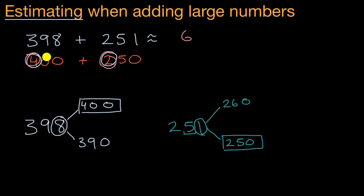And if I have zero tens and I'm adding it to five tens, well, I'm still going to have five tens. And then I have zero ones in either case, so I'm still going to have zero ones. And so there you have it. We were able to estimate 398 plus 251 as being roughly 650.